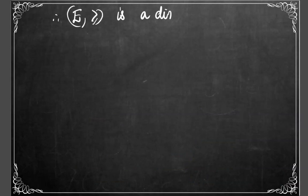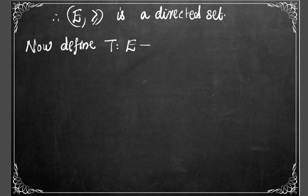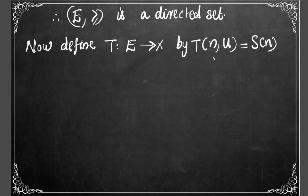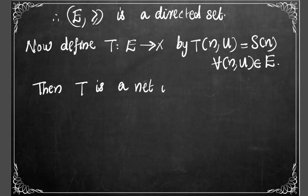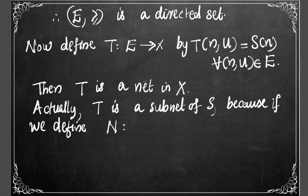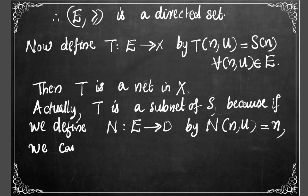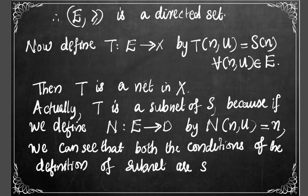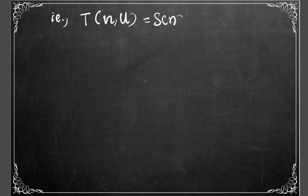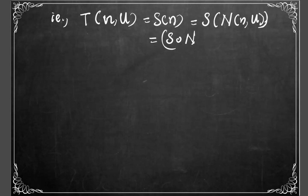Thus we have proved the third axiom of a directed set, and we can conclude that E together with the follows relation forms a directed set. Now let us define t from E to X by: t(n, U) = s(n) for every ordered pair (n, U) ∈ E. Then since E is a directed set, t will be a net in X. This t is actually a subnet of s, because if we define N from E to D by N(n, U) = n, both conditions of the definition of subnet are satisfied.